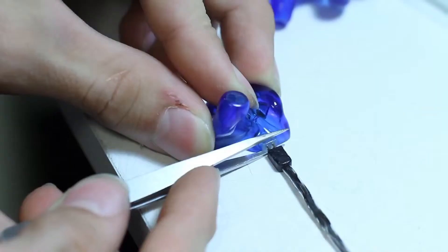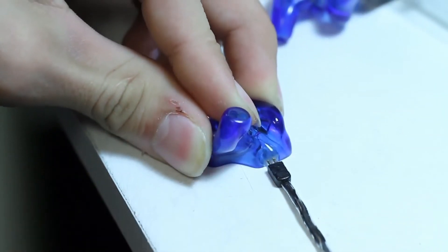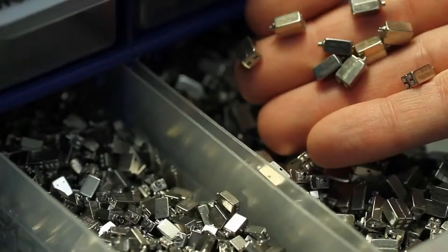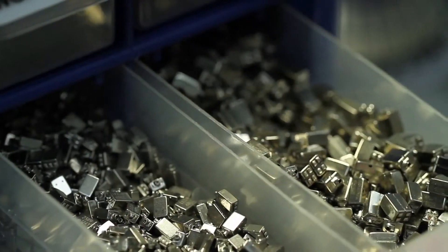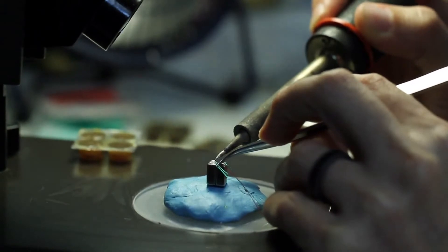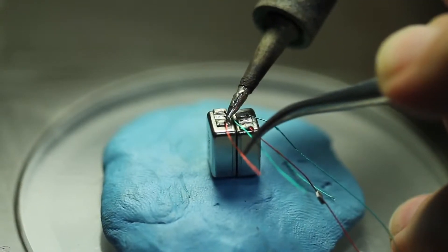This is where we install the miniature speakers and crossovers into the shells. We use balanced armature speakers because of their ability to block out sound and give our monitors amazing clarity and resolution.